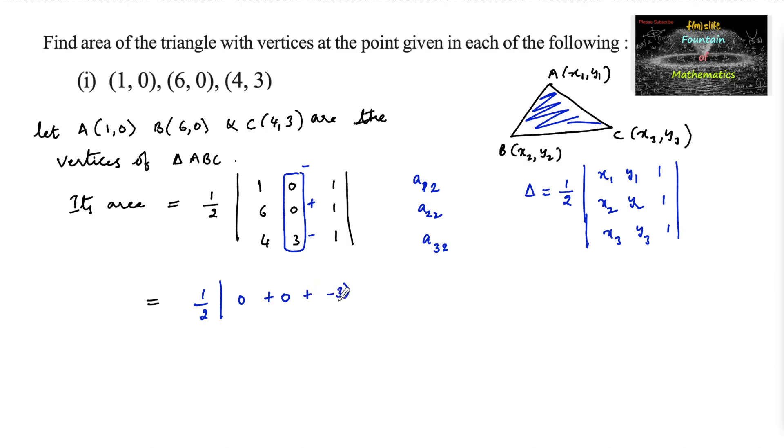plus minus 3 into, using deleting this row and column, the determinant of 1, 1, 6, 1. So 1 times 1 minus 6 times 1 equals 1 minus 6.